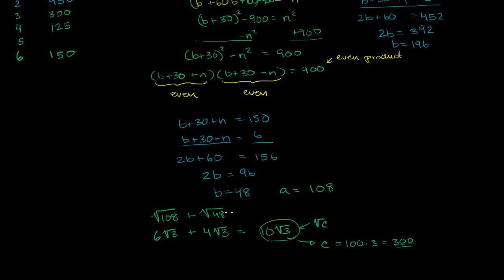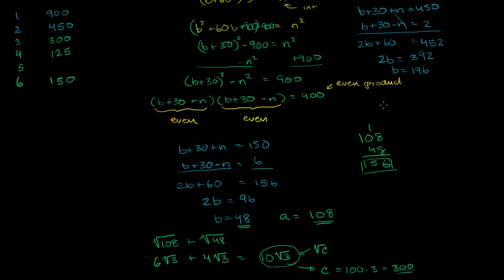So our best values are b = 48 and a = 108. Taking the sum: 108 + 48 = 156. As we move to factor pairs closer together, b gets lower and lower, giving a smaller sum. So the most extreme valid factor pair gave us the maximum. The answer is 156.